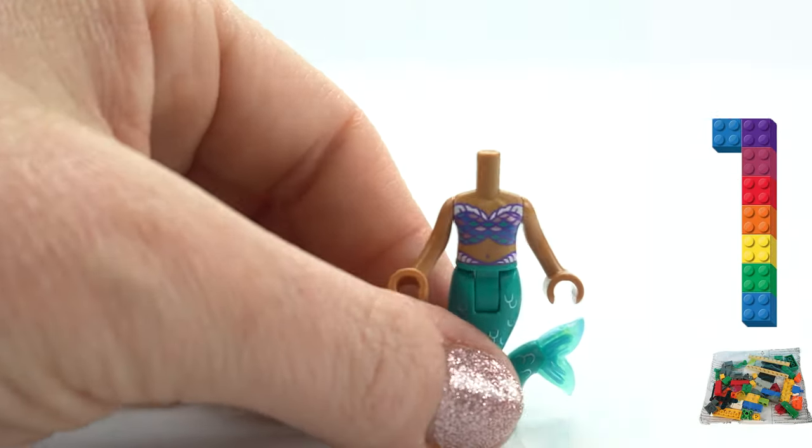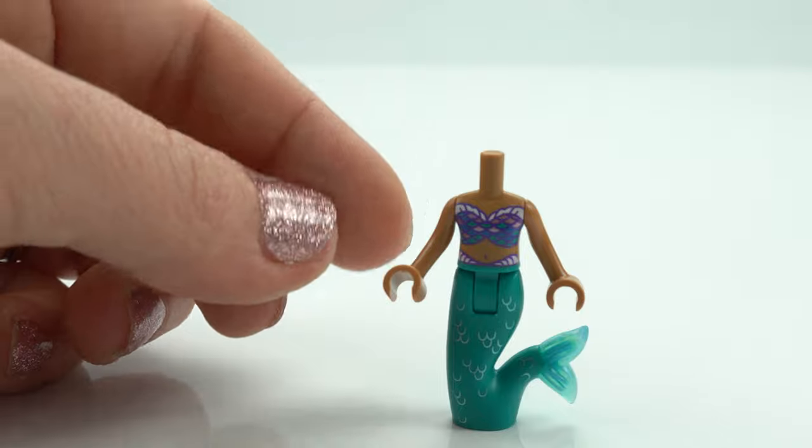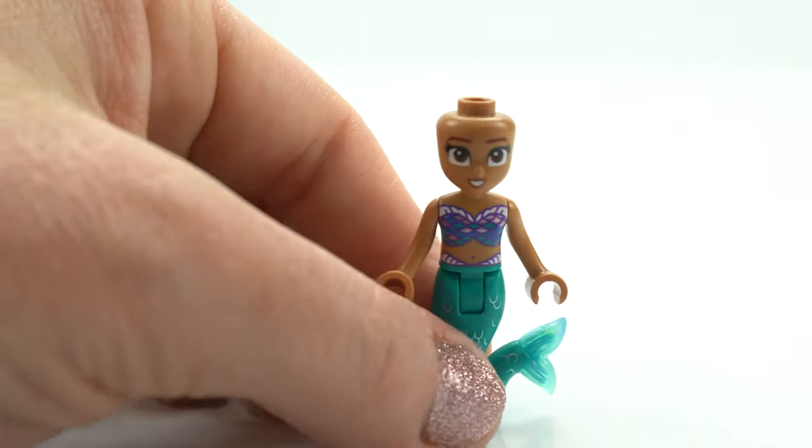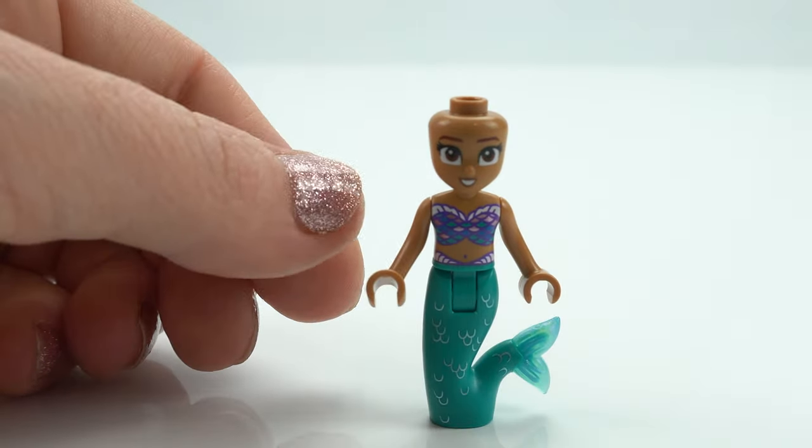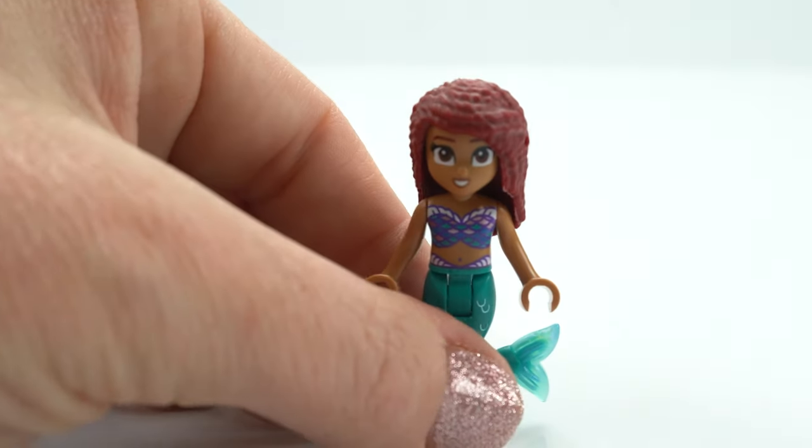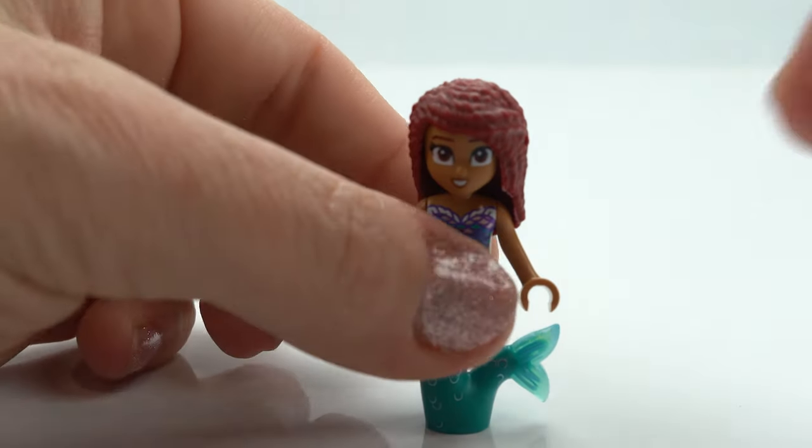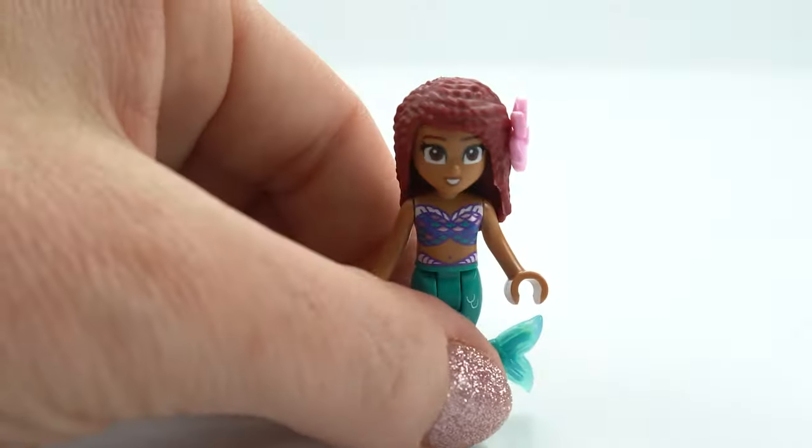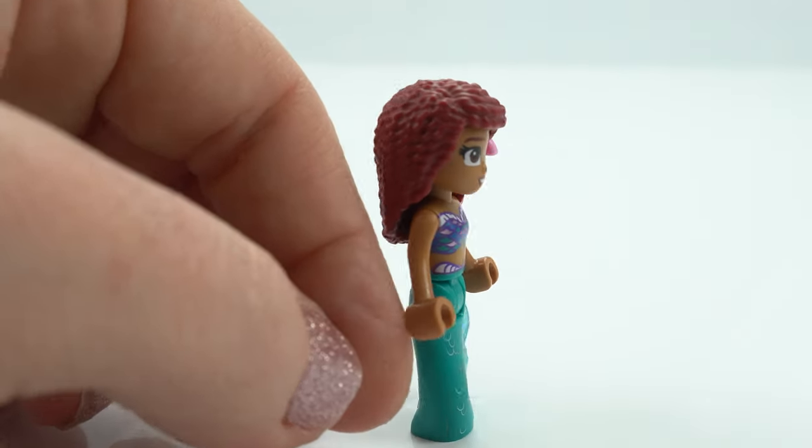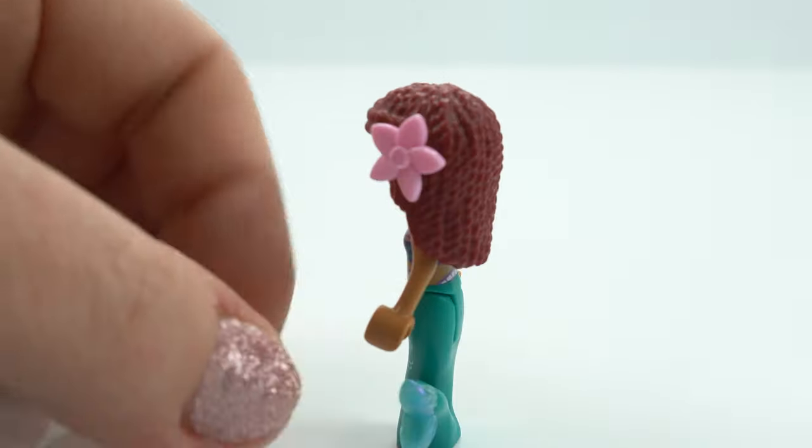She's got a beautiful tail and translucent fin with a beautiful scale bralette. Her gorgeous face here, beautiful brown eyes and darker skin tone. Love the skin tone. And her beautiful Albany locks, I would call them. Her beautiful flower in her hair. We'll give her a lovely spin here. She is so cute.